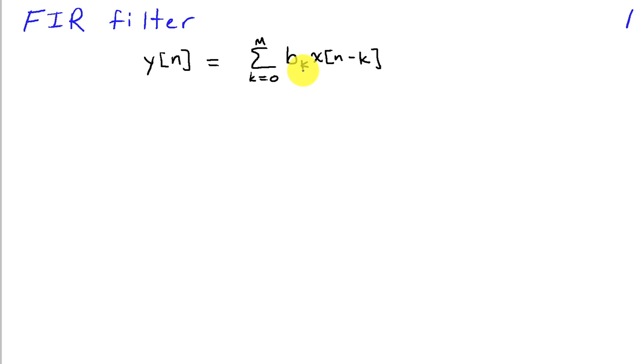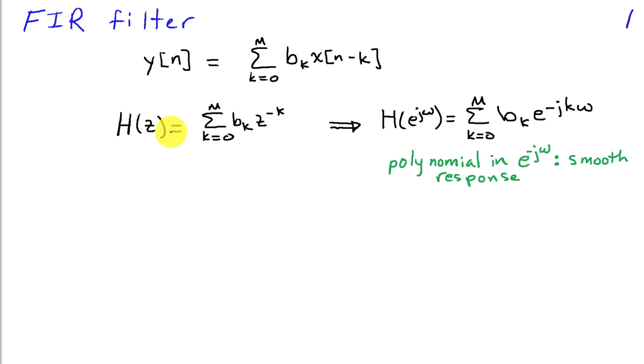The b_k's are the weighting coefficients. The system function is a function of the b_k's - it's the sum from k equals 0 to M of b_k z^(-k), which implies that the frequency response is given by the sum k equals 0 to M of b_k e^(-jkω).